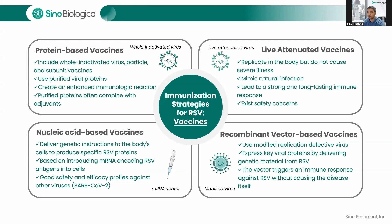Protein-based vaccines use purified viral proteins such as F and G glycoproteins of RSV to stimulate an immune response. The purified proteins are often combined with adjuvants to enhance the immune response and improve vaccine efficacy. Live attenuated vaccines are weakened forms of the RSV virus that can still replicate in the body but do not cause severe illness. They mimic natural infection and lead to strong, long-lasting immune responses. However, there are safety concerns, especially for high-risk populations, including the risk of the attenuated virus reverting to a virulent form and causing severe disease.